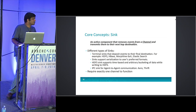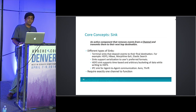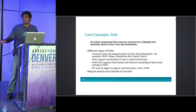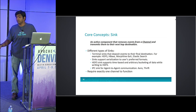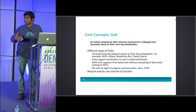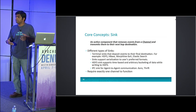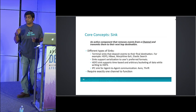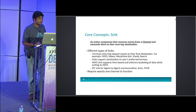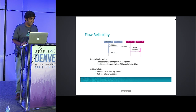Every sink can take data only from one channel. If you have a lot of sources writing data to one channel and you want to send all of that to the HDFS sink, you can have one sink reading from that channel. For better concurrency, have multiple sinks reading from the same channel — each sink gets exactly one thread, so more sinks means data goes in faster.